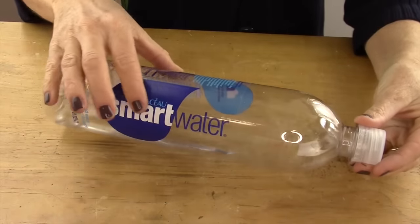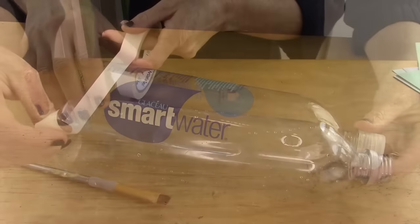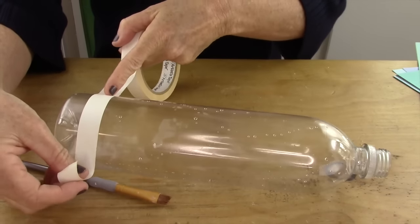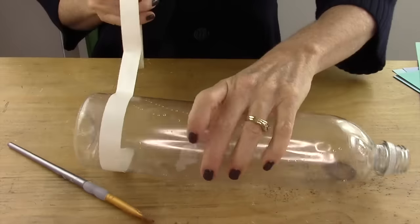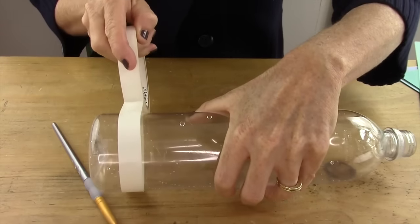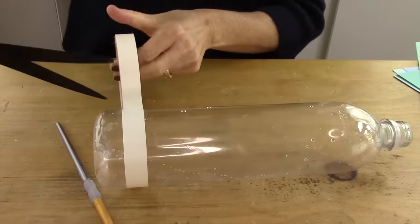First, take your water bottle and remove the sticker. Then take your artist tape - you want to use something that's not going to stick forever. I use artist tape because it comes off really easily.